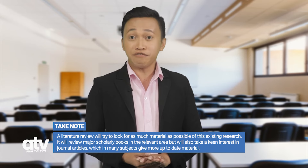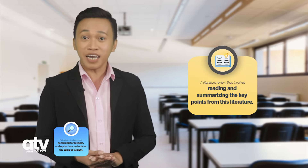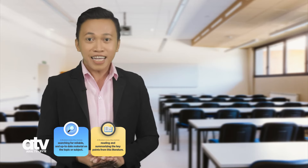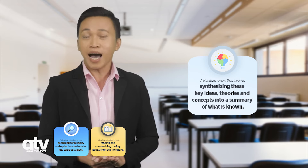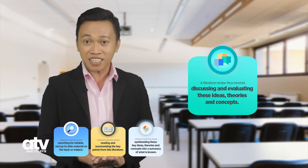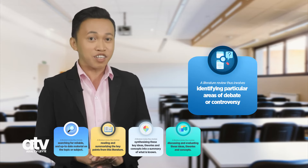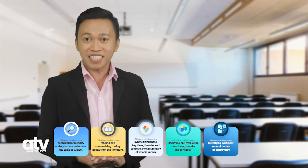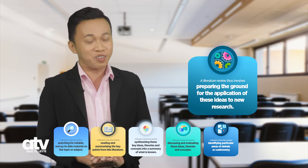A literature review will try to look for as much material as possible of existing research, reviewing major scholarly books in the relevant area and also taking a keen interest in journal articles, which in many subjects give more up-to-date material. Preparing a literature review thus involves: first, searching for reliable, accurate, and up-to-date material on the topic; second, reading and summarizing the key points from this literature; third, synthesizing these key ideas, theories, and concepts into a summary of what is known; fourth, discussing and evaluating these ideas, theories, and concepts; fifth, identifying particular areas of debate or controversy; and sixth, preparing the ground for the application of these research ideas to new research.